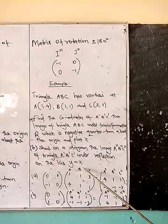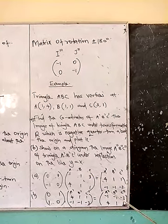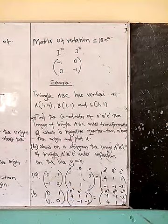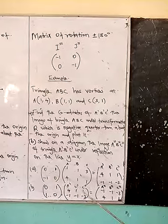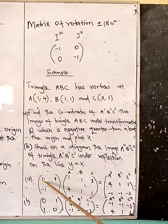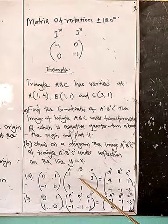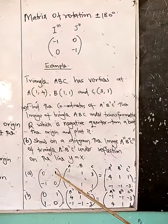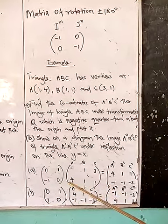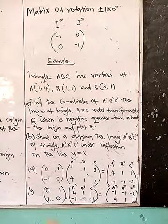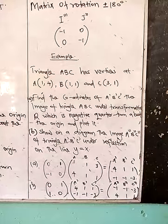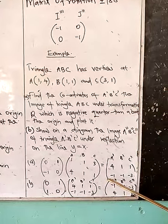To obtain B prime, we follow the same row-by-column order. Row 1, column 2: 0×1 + 1×1 = 1. Row 2, column 2: 1×(−1) + 0×1 = −1. So 0 + (−1) = −1. Therefore B prime has coordinates (1, −1).